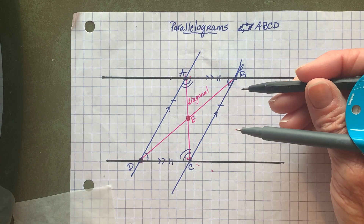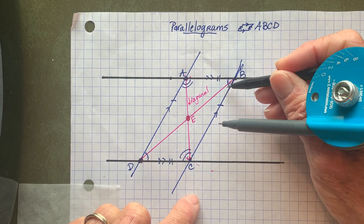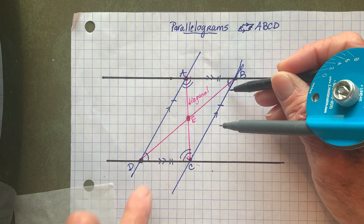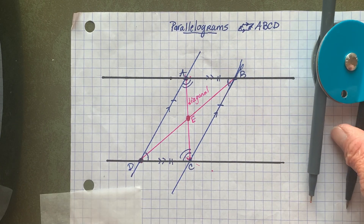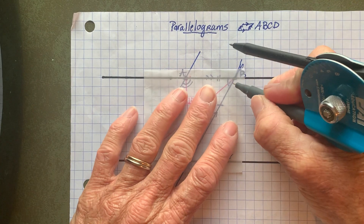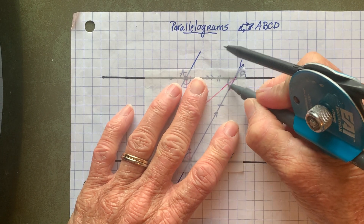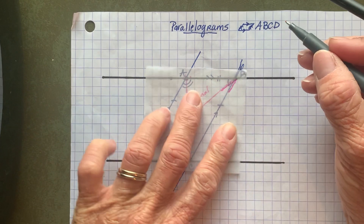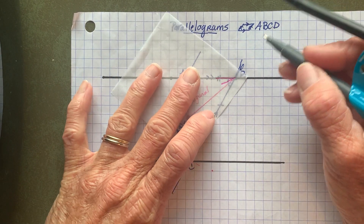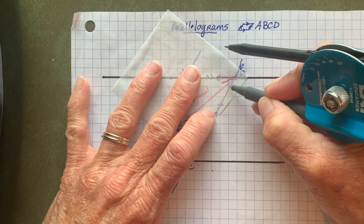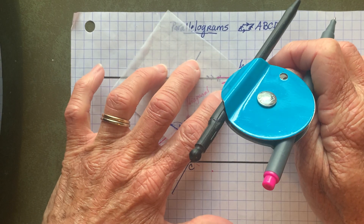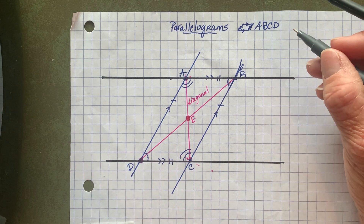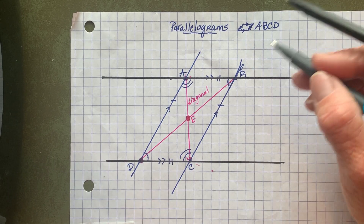The diagonals cut each other in half. And it might lead you to question whether the diagonals also bisect the angles of this parallelogram. However, if I trace the right portion of angle B that was formed by that diagonal and compare it, those two pieces are not equal. So we've discovered all the properties of a parallelogram.